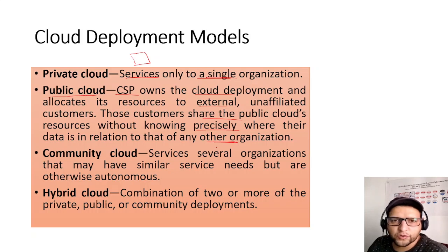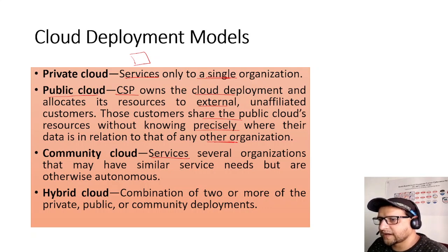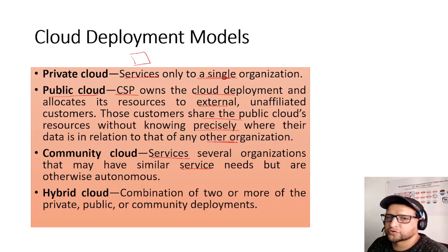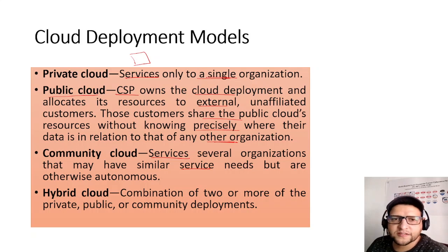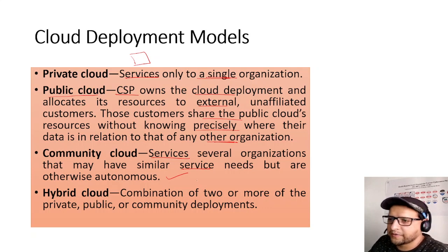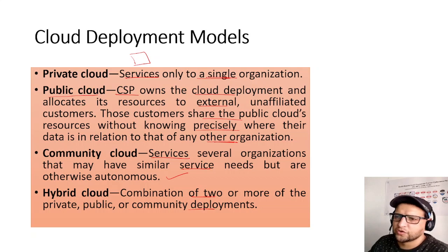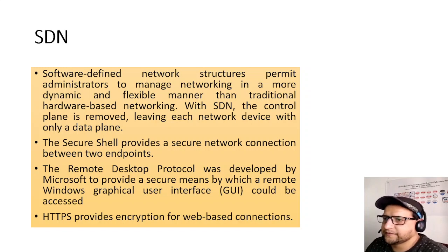Community cloud serves several organizations with similar service needs that are otherwise autonomous — for example, banks or universities with similar interests. Hybrid cloud is a combination of two or more of the private, public, or community clouds, allowing you to use any of the previous models together.